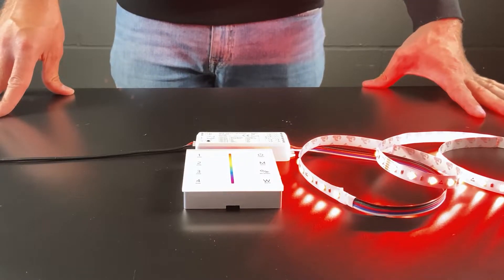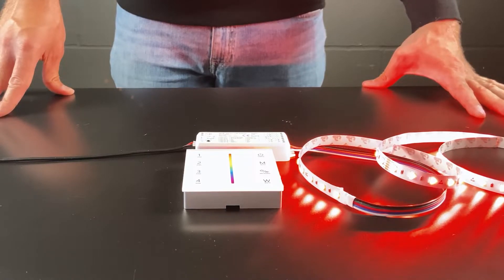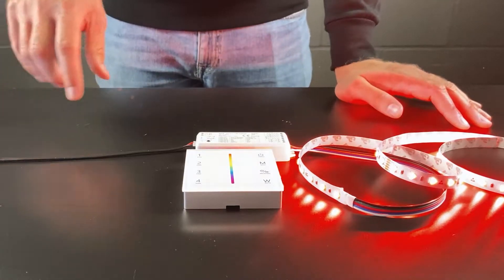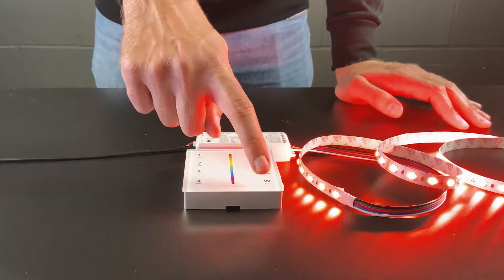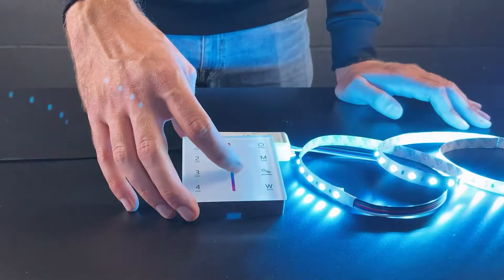This is for more precise control on the white channel and also offers a variety of colour temperatures which you can choose from. On the wall plate, if we press white, it will bring in the white as well as the colours.